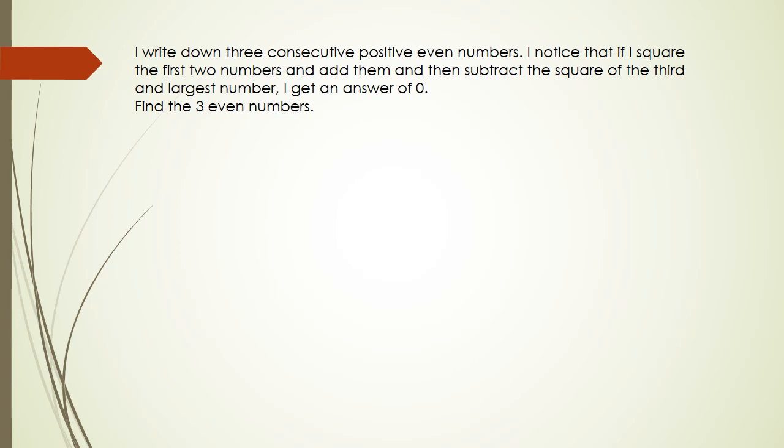Okay, so I'm going to get started with this question. We've got three positive even numbers, and it says that if I square the first two numbers and add them, and then subtract the square of the third and largest number, I get an answer of zero.